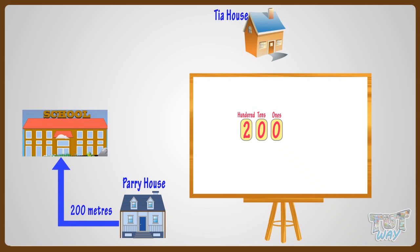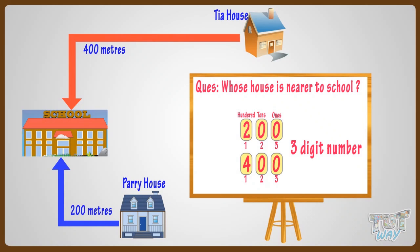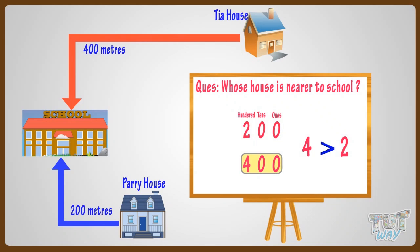Let's take another example. Perry's house is two hundred meters away from school, and Tia's house is four hundred meters away from school. Whose house is nearer to school? Both the numbers, two hundred and four hundred, are three-digit numbers. So first compare the numerals at the biggest place in the numbers — that is, two and four. Here, four is greater than two. Hence, four hundred is bigger than two hundred.